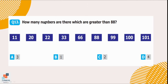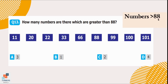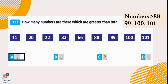Question number 13. How many numbers are there which are greater than 88? Looking at the list of numbers, there are three numbers greater than 88: 99, 100, and 101. That is option A.